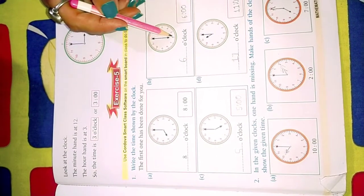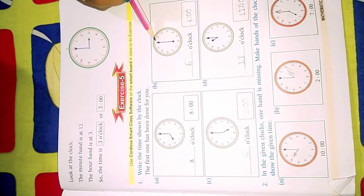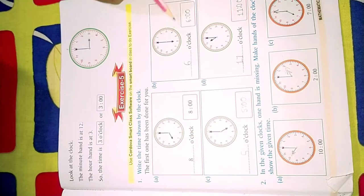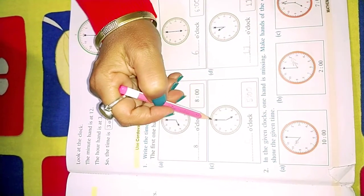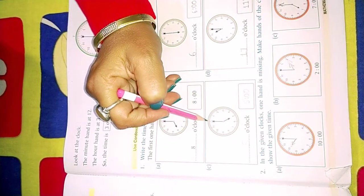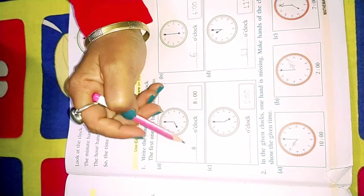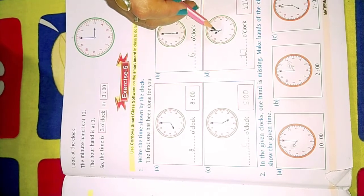Now the hour hand is at 6 and the minute hand is at 12, so it is 6 o'clock. Now hour hand is at 5 and the minute hand is at 12, so it is 5 o'clock.